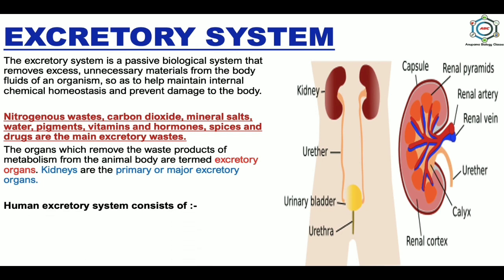The human excretory system consists of a pair of kidneys, a pair of ureters, a urinary bladder, and a urethra. You can see the picture — two kidney-bean-shaped structures are present. From the kidney, the ureter arises, which connects to the urinary bladder where urine is stored. From the urinary bladder, the urethra is present, which is responsible for excreting the urine from the body.